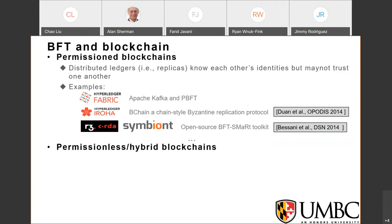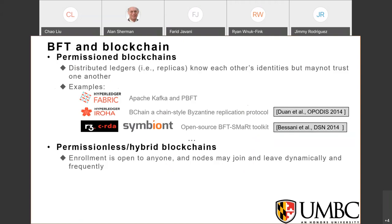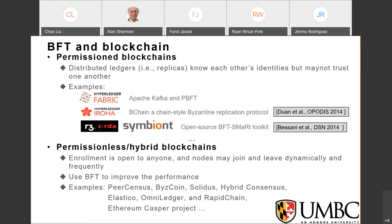BFT protocols are also used in permissionless blockchains, where enrollment is open to anyone and nodes may join and leave dynamically and frequently. BFT is used to improve the performance of permissionless blockchains. For example, Bitcoin commits transactions every 10 minutes and its throughput is limited to only 7 transactions per second. Permissionless blockchains using BFT are known as hybrid blockchains — for example, Ethereum, Casper Project, and RapidChain.